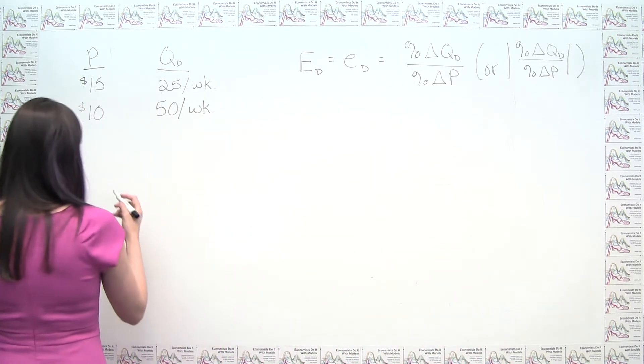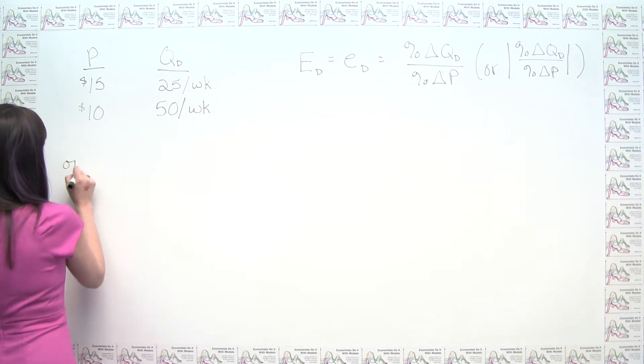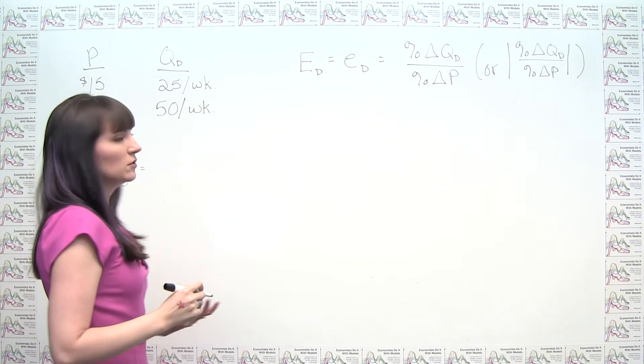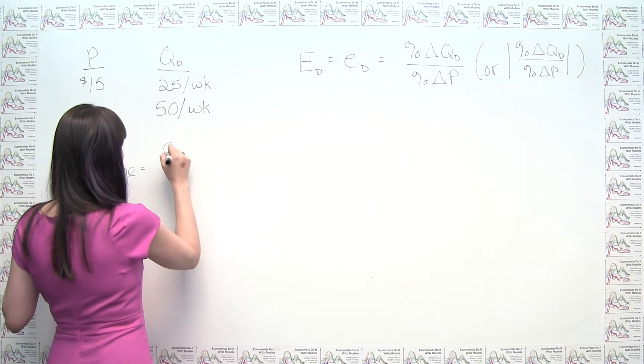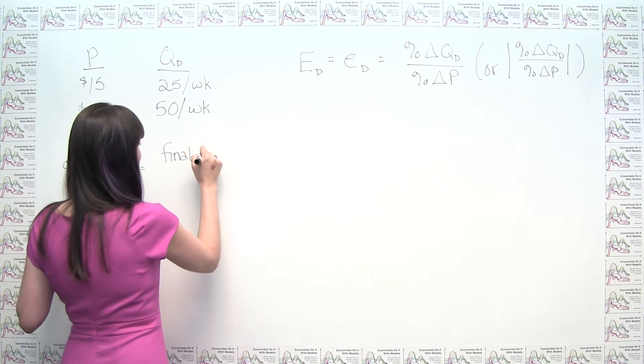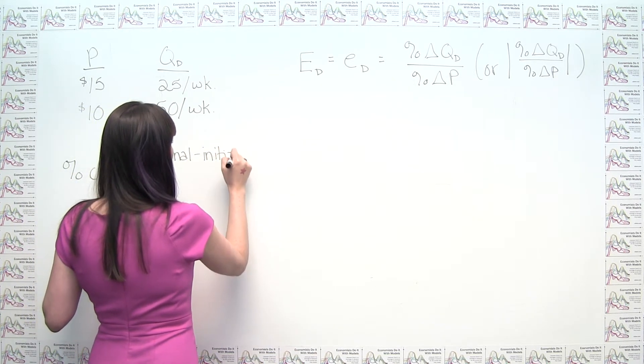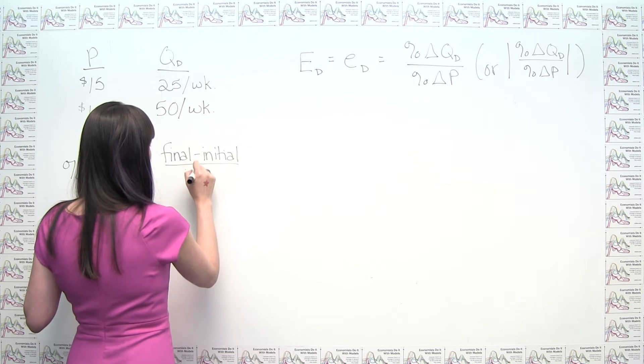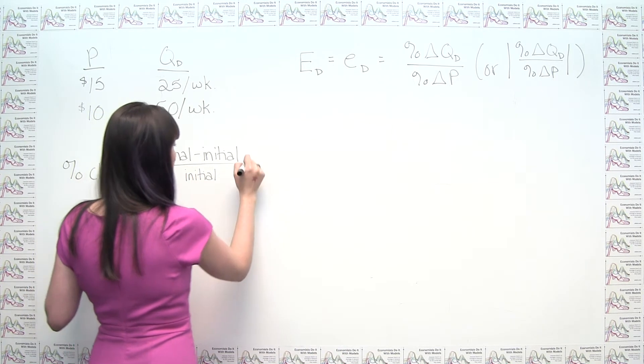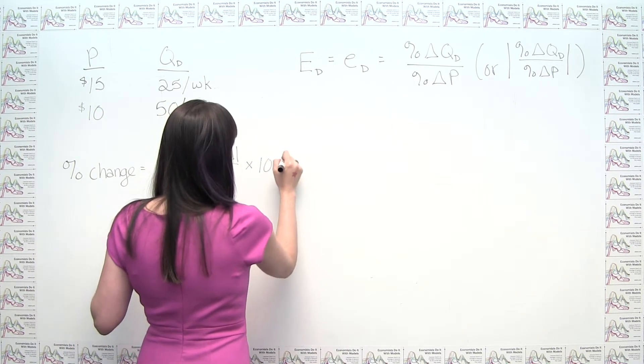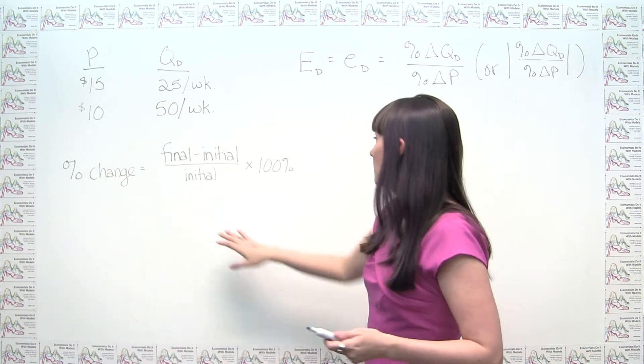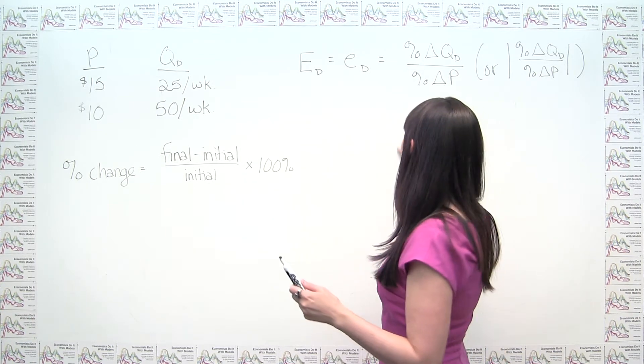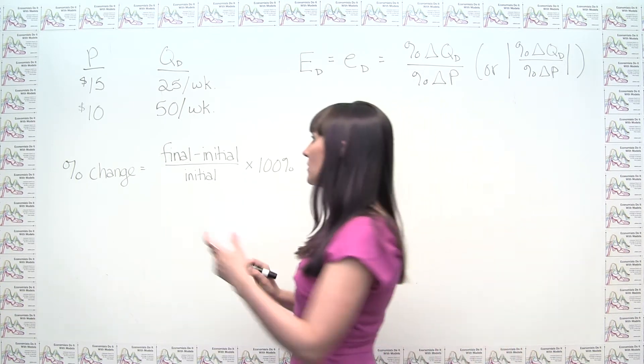So we could say here that in general, percent change is just equal to final minus initial, so the absolute change divided by initial, and then times 100% so that we get a percentage. So if we need to, we can just do this. So we can plug all this into the formula, and we can see the following.